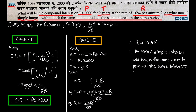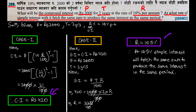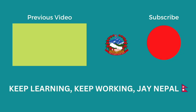In the same period of 2 years, at 10.5% simple interest rate, it will produce the same interest. This is the complete solution to question 28B. This covers the entire question 28, a long question from the compound interest chapter. Keep learning, keep working, and join us.